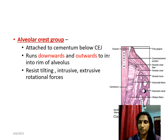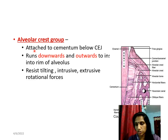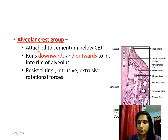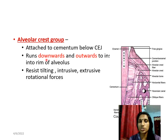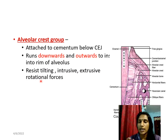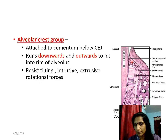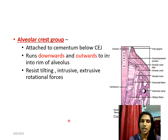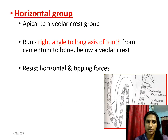For the first set — the alveolar crest fibers — remember all these fibers have an origin and an insertion. The origin is at the cementum and the attachment is onto the bone. Alveolar crest fibers start from the cementum below the cementoenamel junction and run downwards and outwards to insert into the rim of the alveolus or bundle bone. They resist forces directed on the tooth.